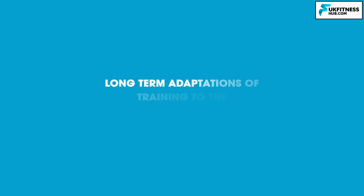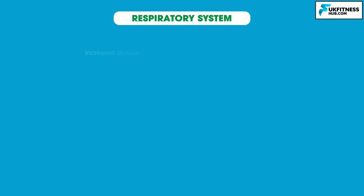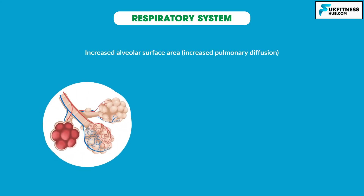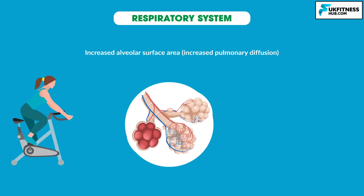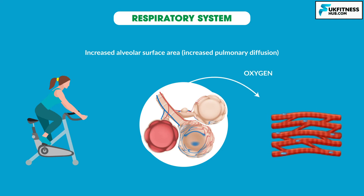Finally, we have the long-term adaptations to the respiratory system. First is an increased alveolar surface area, meaning increased pulmonary diffusion. Aerobic training increases the surface area of the alveoli, which in turn increases pulmonary diffusion, allowing more oxygen to be extracted and transported to working muscles for use.